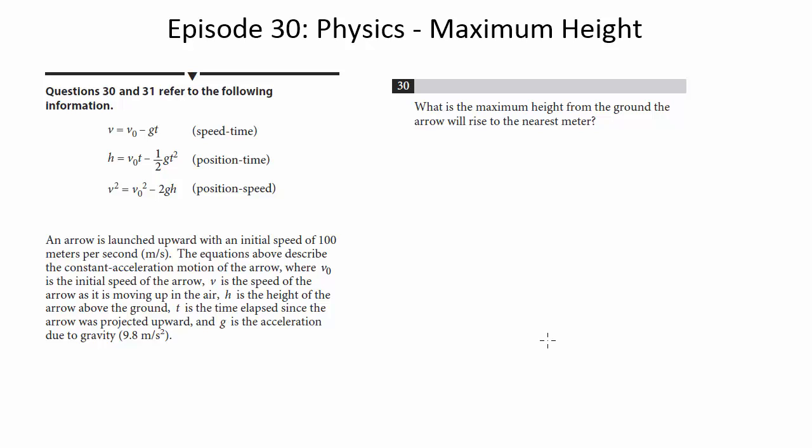These last two hard questions in the grid-ins of test 4, the calculator permitted section, are very tricky. They're easier if you've done physics, but I imagine many of you out there, if you're in junior year and taking the PSAT, haven't done physics, so probably not very helpful. But if you've done physics, you can approach them that way.